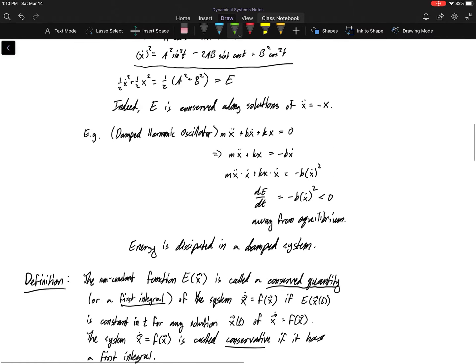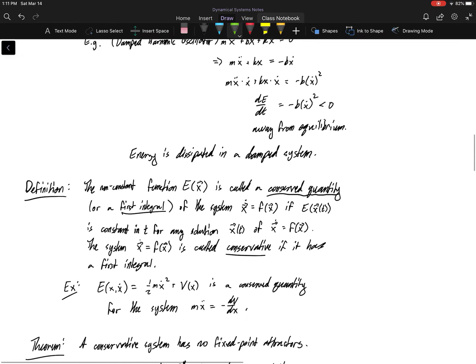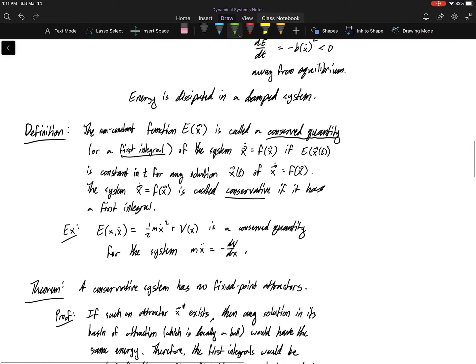And then we talked about the damped harmonic oscillator, how that one actually is a dissipative system. It takes energy out of the system. So we'll come back to functions like that or to systems where we dissipate energy when we talk about limit cycles. When we try to rule out limit cycles, that'll be in the next video.